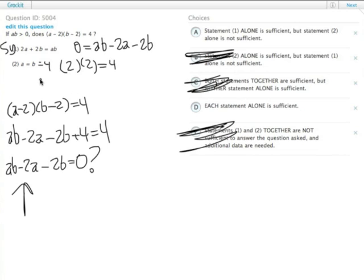However, if we change it even a little bit, let's just say a equals b equals 1, a minus 2 equals negative 1, and b minus 2 equals negative 1. Those two times each other equals 1, not 4.